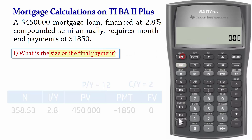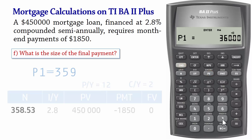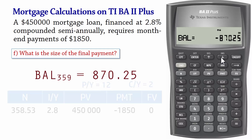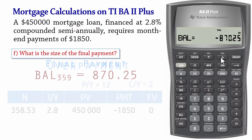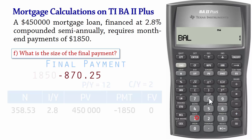Next we find the size of the final payment. Recall that N equals 358.53, so the final payment is the 359th payment. We set P1 and P2 to 359. We can see that the outstanding balance is $870.25, which represents an overpayment if we make the regular payment of $1,850. So to find the required last payment, we subtract the overpayment of $870.25 from the regular payment of $1,850 to obtain $979.75. So the size of the last payment is $979.75.